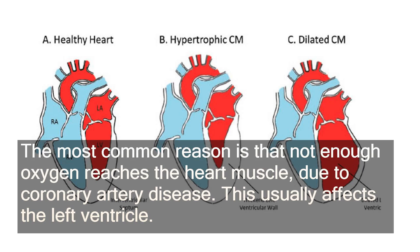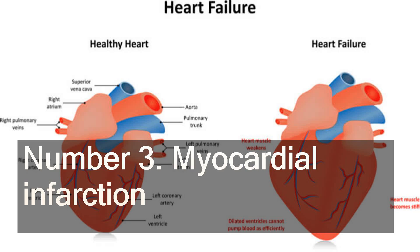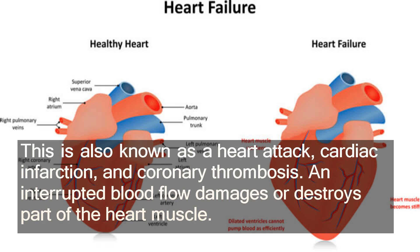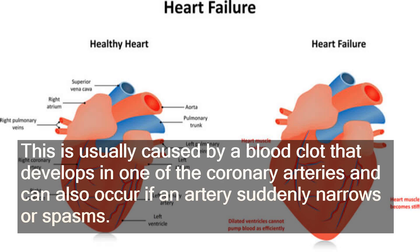Number three: myocardial infarction, also known as a heart attack, cardiac infarction, and coronary thrombosis. An interrupted blood flow damages or destroys part of the heart muscle. This is usually caused by a blood clot that develops in one of the coronary arteries, and can also occur if an artery suddenly narrows or spasms.